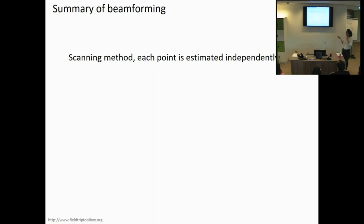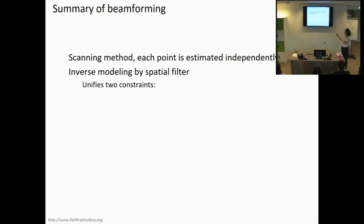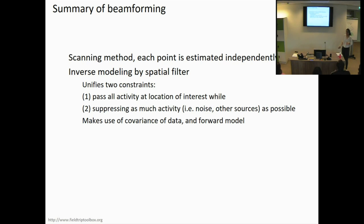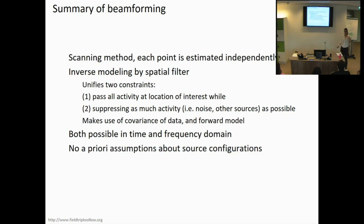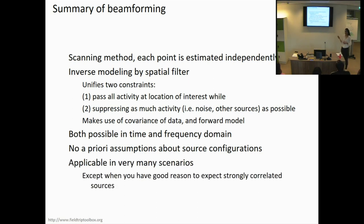In summary: beamforming is a source reconstruction method where each point is estimated independently by finding a spatial filter that passes activity at the source of interest and inhibits activity from other sources. It uses the covariance matrix and the forward model. The LCMV beamformer works in the time domain; for oscillatory data the DICS beamformer uses the cross-spectral density. No prior assumptions about the number of sources are needed, but source correlations can be problematic — in that case, exploit trial-by-trial variance or consider a different reconstruction method.